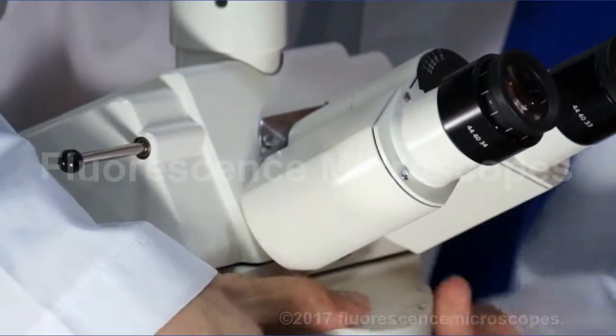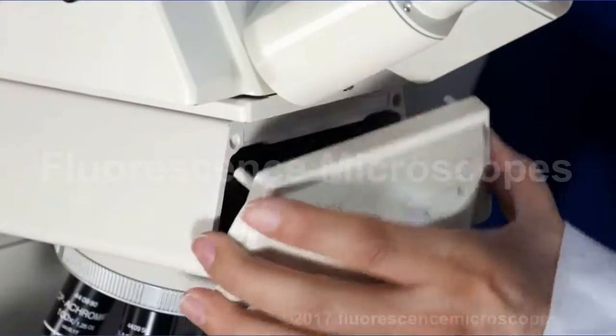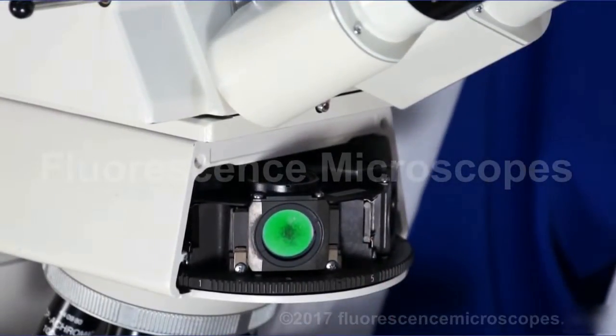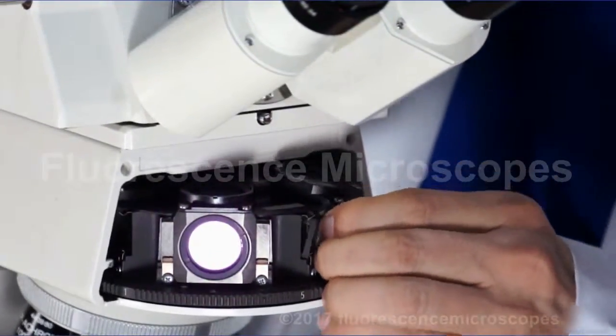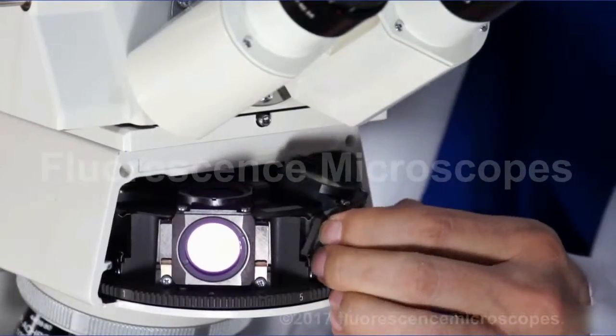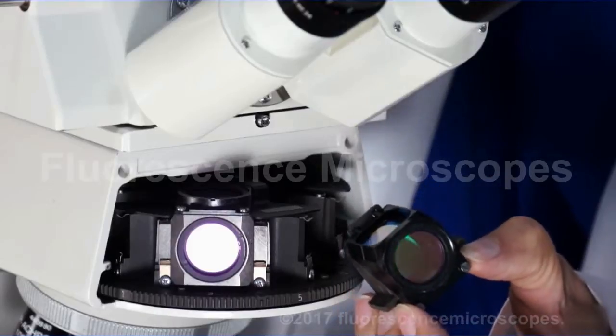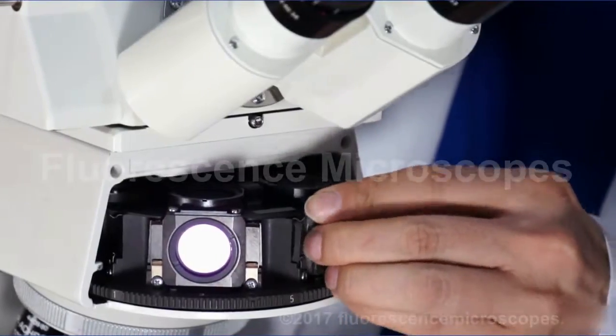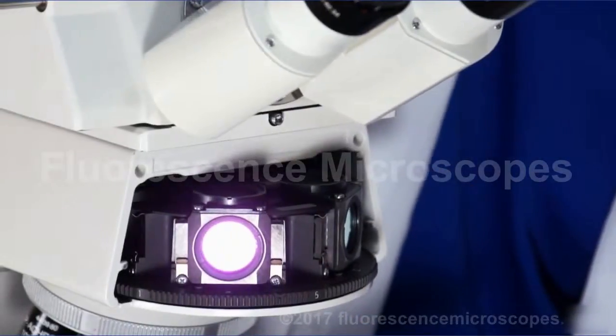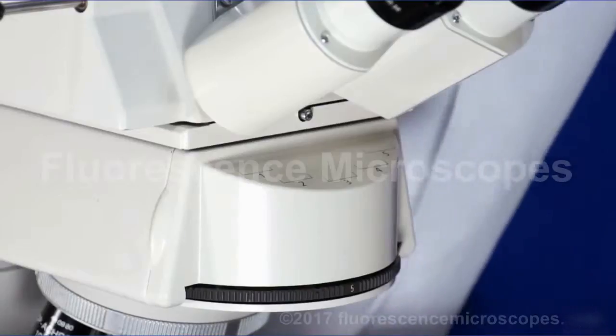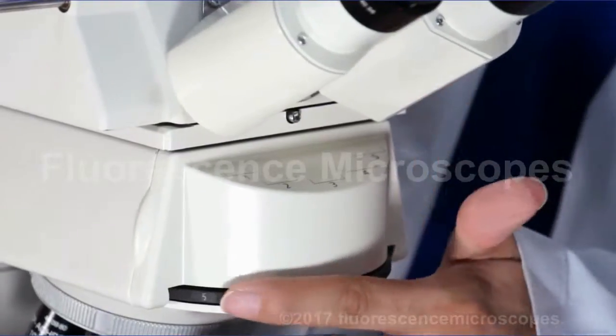Your filter cubes are inside. And it's easy to pull them out. They're the newer version, push and click. We've also labeled each cube as to what it is, so you know the wavelengths. You can change the filter cube by turning this knob.